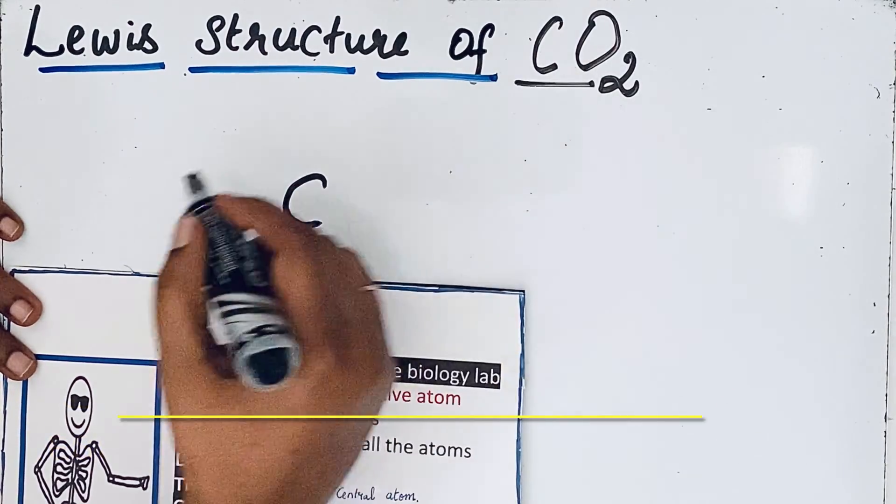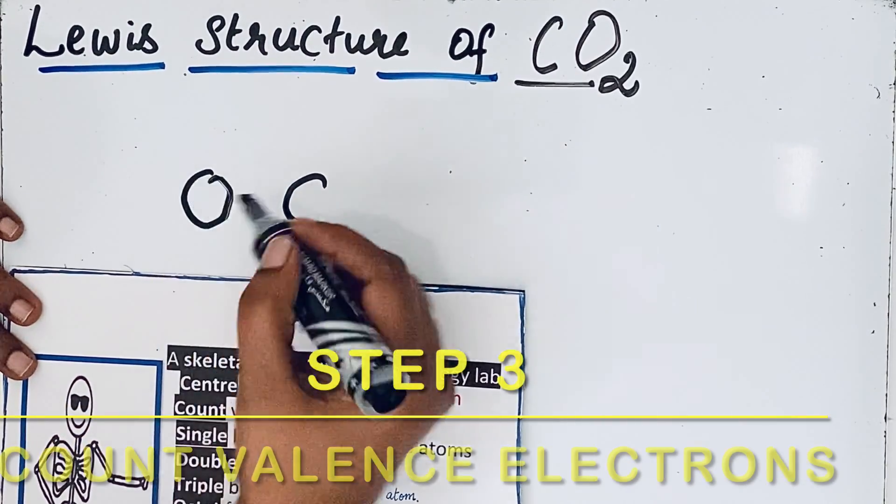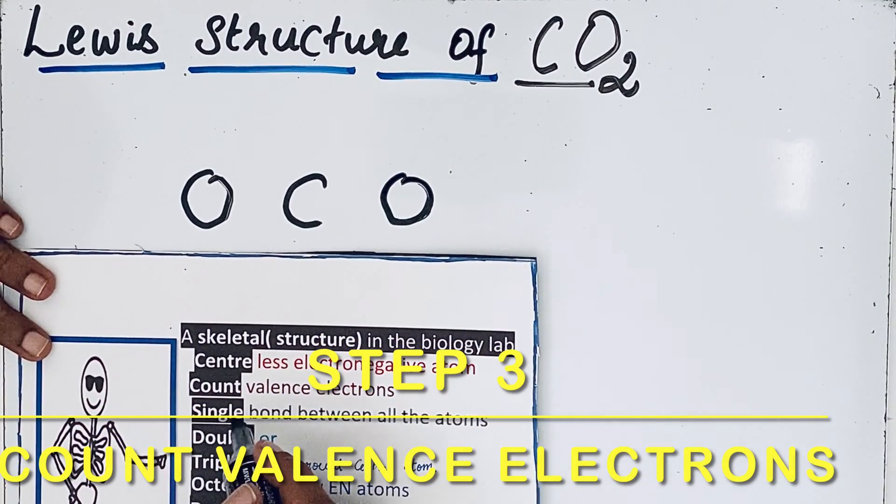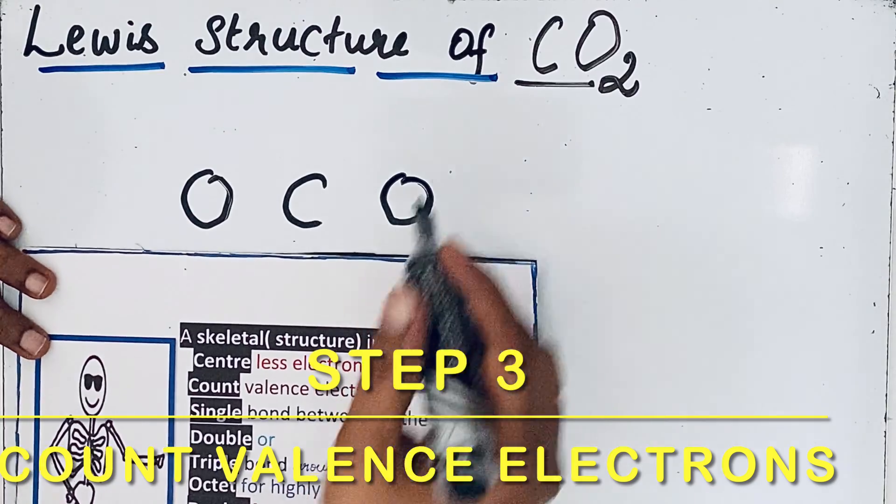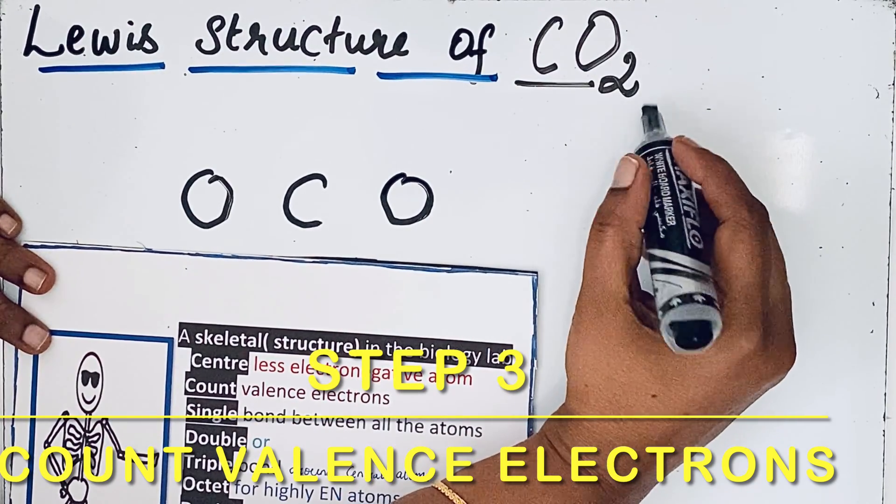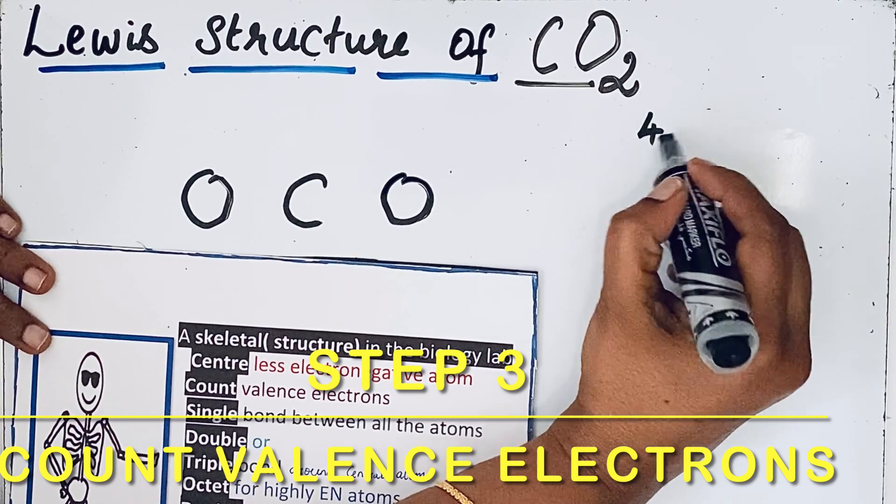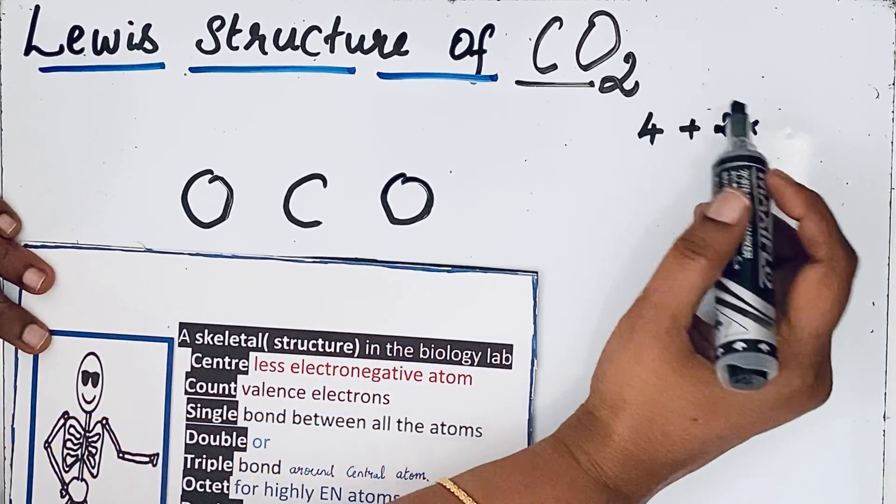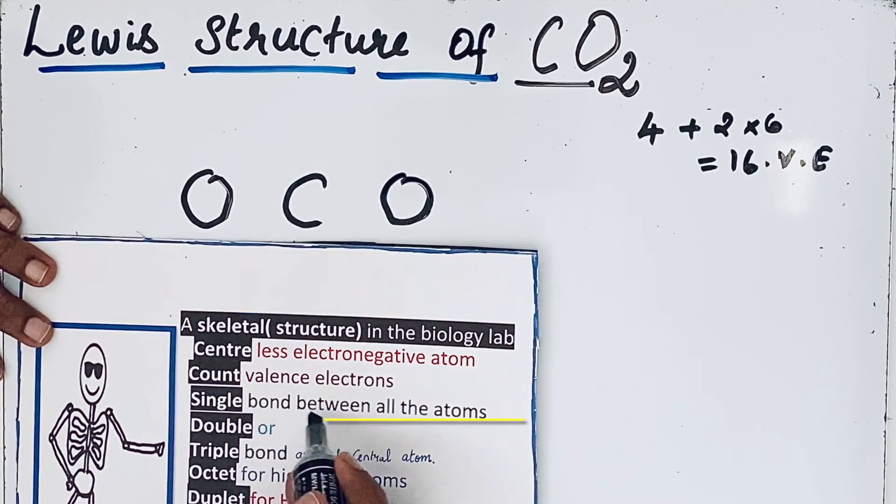In carbon dioxide molecule, carbon is less electronegative, so let us draw that carbon in the center and oxygen just around carbon. Look at the next step: count valence electrons. Carbon, here only one carbon atom, valence electron four. So four plus two oxygen atoms are there, so two times six.